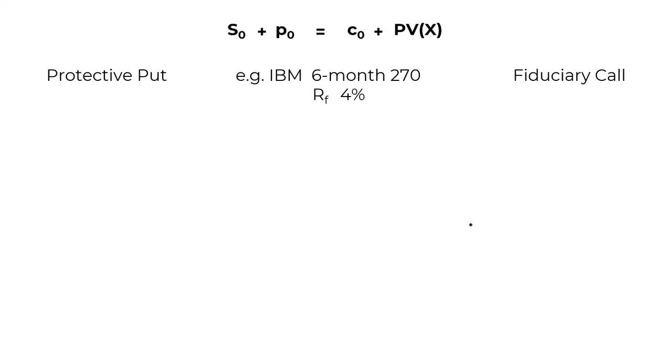Let's demonstrate it. We have here an example for IBM, six-month 270 strike. Risk-free is 4%, we'll use that shortly. We're going to compare the protective put and the fiduciary call, and we're going to look at the payoffs in two scenarios. First of all, we'll look at what happens if IBM stock at expiry is priced at $250. Note that means at expiry, the underlying is worth less than the strike. The strike is 270.